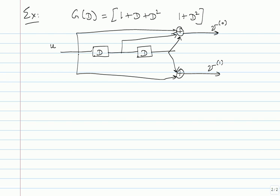I'm going to draw the complete trellis for this encoder. There are four states: 0, 1, 2, 3. The state is (S0, S1), so state 1 means S0=0, S1=1, and state 2 means S0=1, S1=0. Since there are no feedback elements, just feed-forward, the transitions are easy. From the all-zero state you can go to state 0 or state 2 — state 0 with input 0, state 2 with input 1.